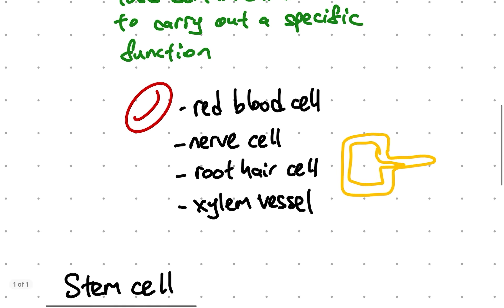A few examples of specialised cells are red blood cells, nerve cells, root hair cells and xylem vessels.